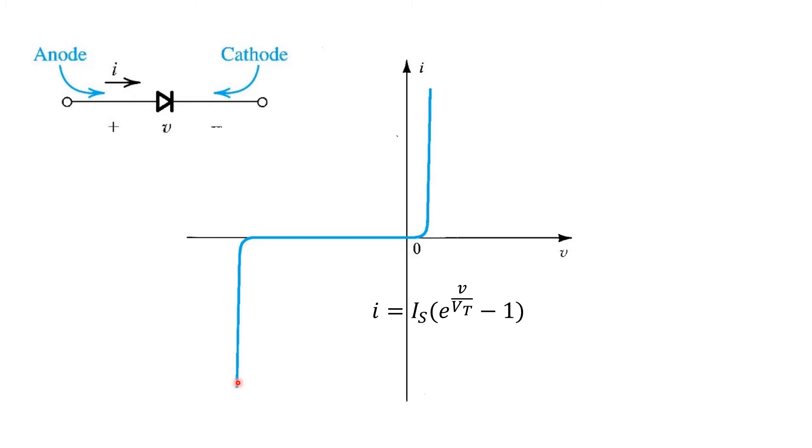Another mechanism for reverse breakdown is zener breakdown. In such cases, the diode is engineered to actually intentionally operate under reverse breakdown and can do so safely for extended periods of time. Diodes engineered in this way are usually called zener diodes and can be useful for providing relatively constant voltages when a suitable reverse current is pushed through them.